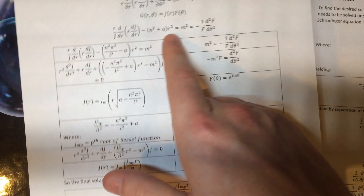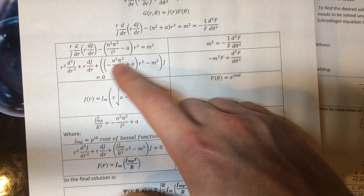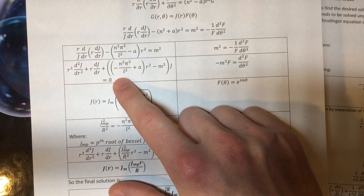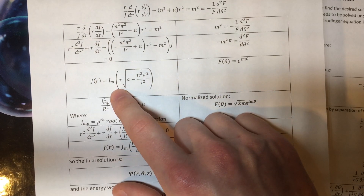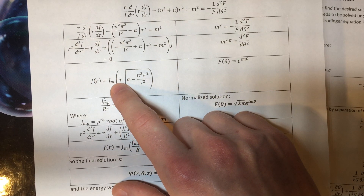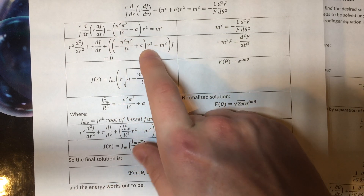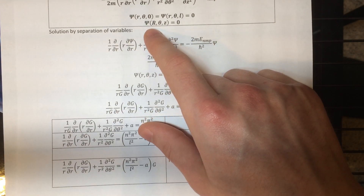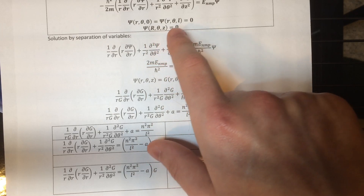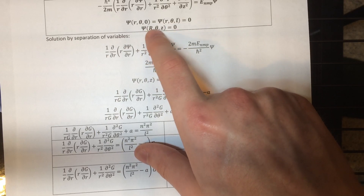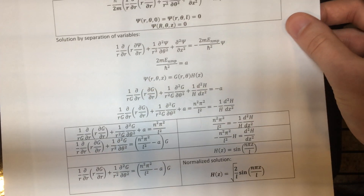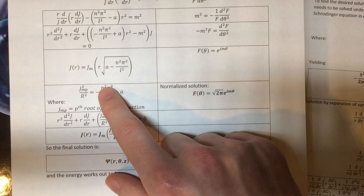Now we solve the radial equation. After some manipulation, we recognize it immediately as a cylindrical Bessel equation. Its solution is Bessel functions with argument r times the square root of whatever constant multiplies r². We need this to satisfy the radial boundary condition: the radial factor j(r) must be zero when the radial coordinate equals the cylinder's radius R, so that the overall wave function goes to zero at the sides of the cylinder.